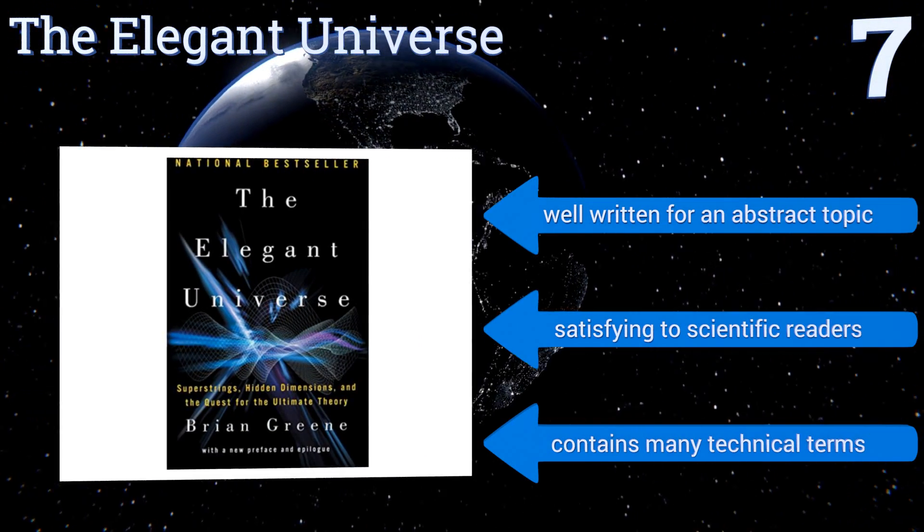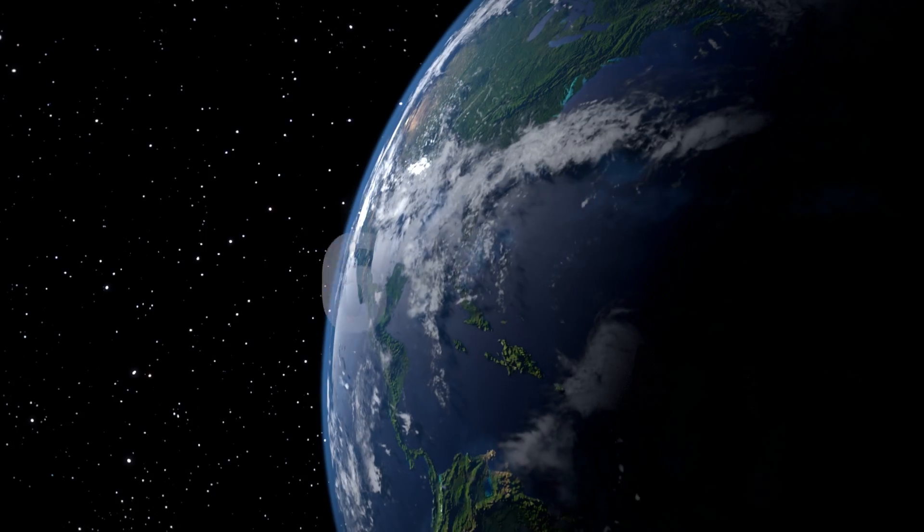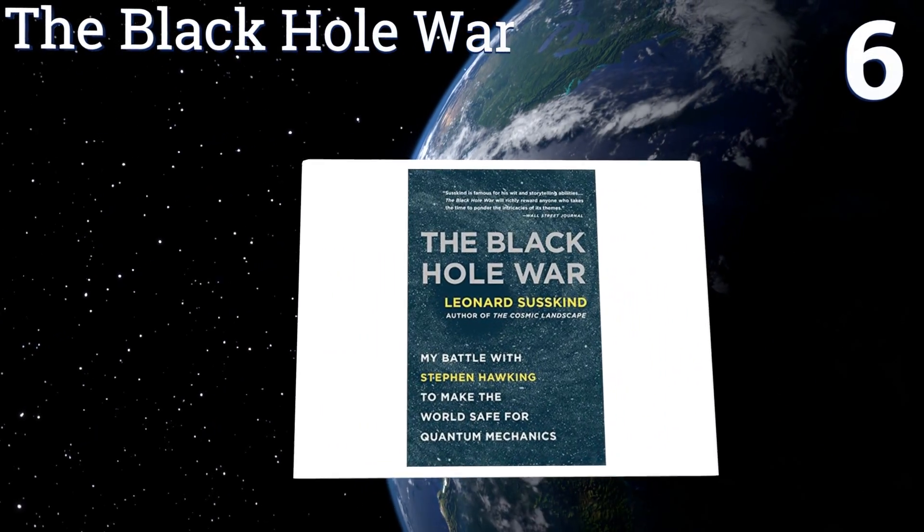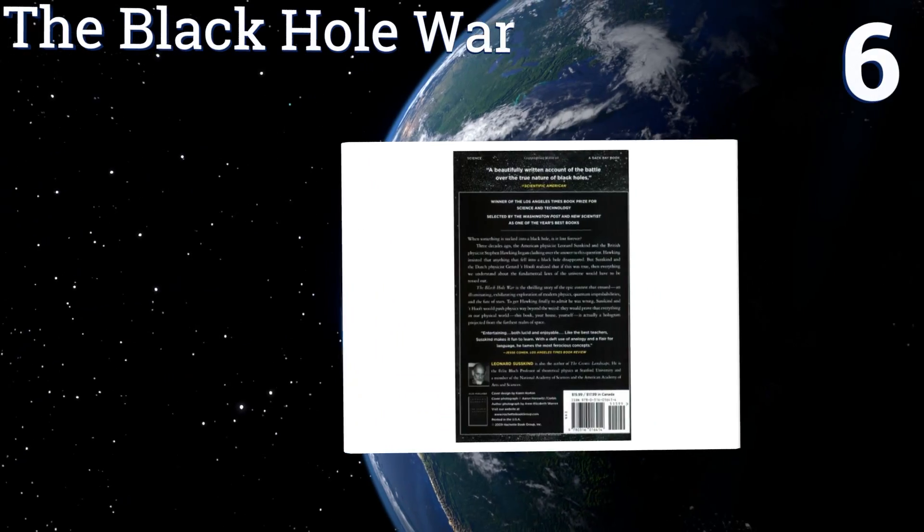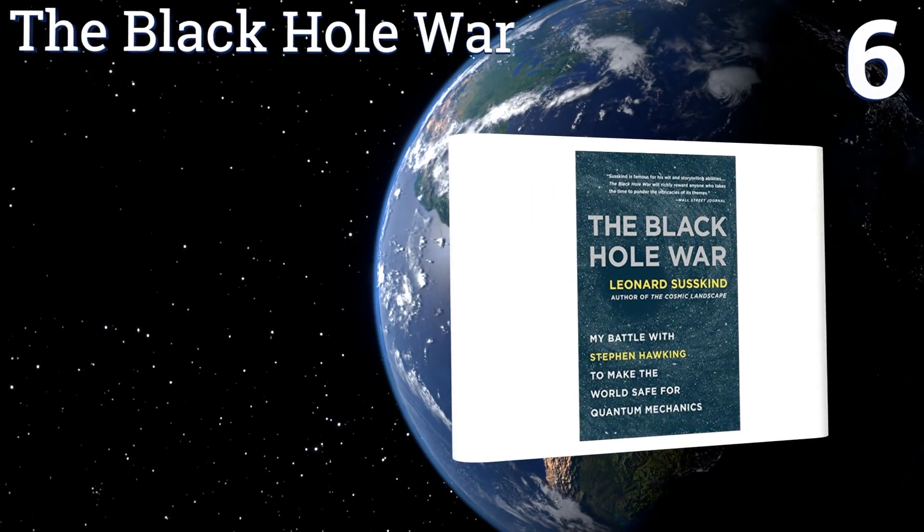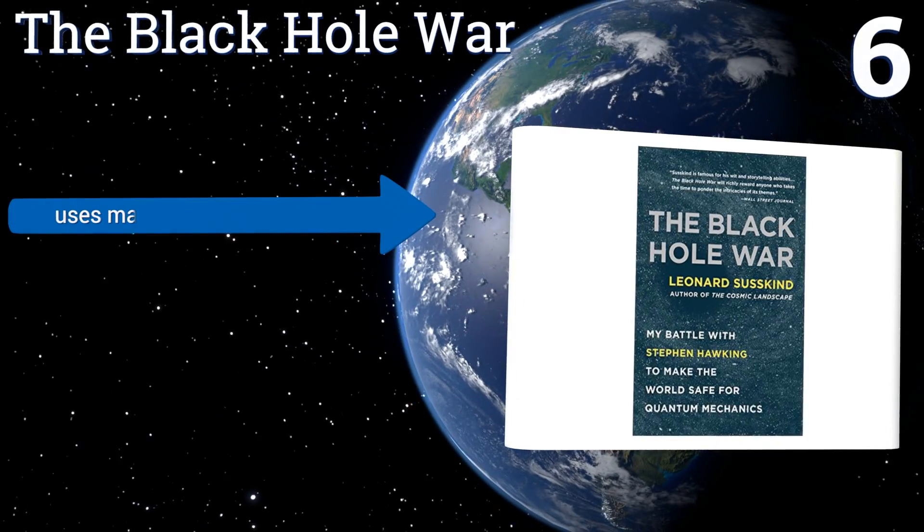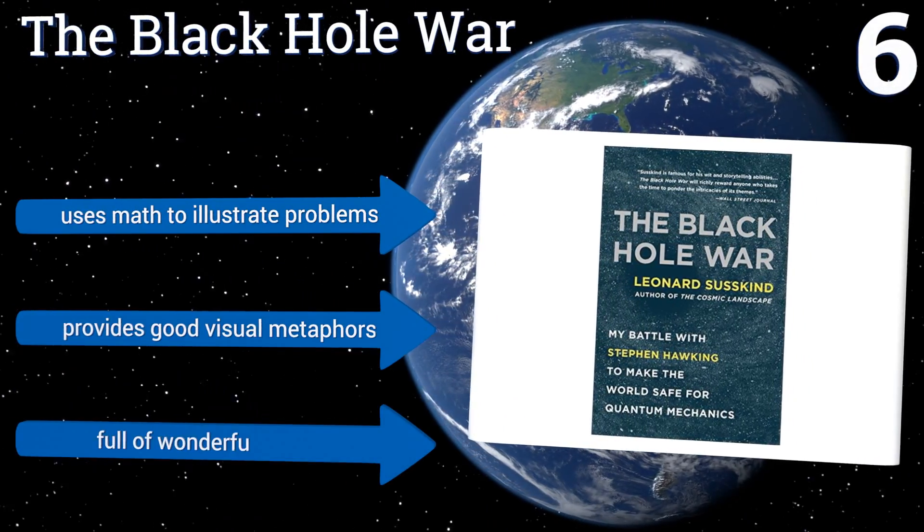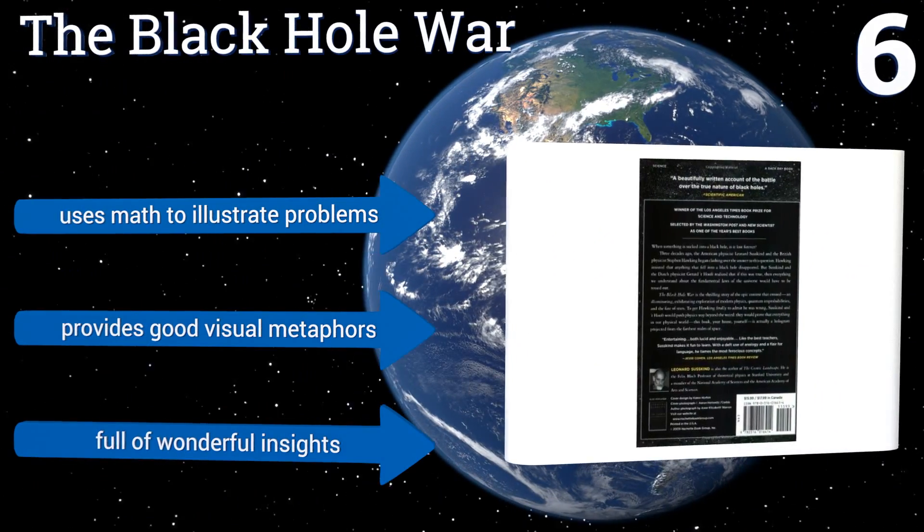Moving up our list to number six, The Black Hole War explains the incredible science behind black holes that came about from Leonard Susskind's and Stephen Hawking's disputing ideas. It has a conversational prose that makes the book easily understood by a wide audience. It uses math to illustrate problems and provides good visual metaphors. It's full of wonderful insights.